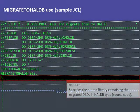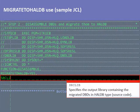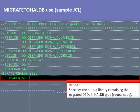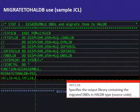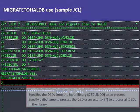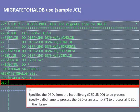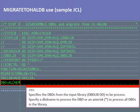Specify the output library where the source code of the DBD, converted to a LDB type, is stored. Also specify the name of the DBD to convert. You can convert all database definitions in the DBD library by specifying an asterisk.